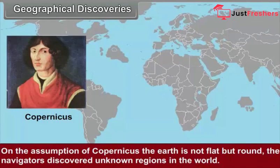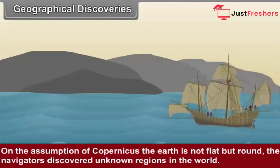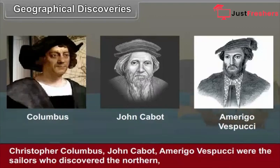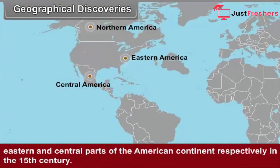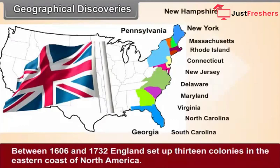On the assumption of Copernicus, the earth is not flat but round. The navigators discovered unknown regions in the world. Christopher Columbus, John Cabot, and Amerigo Vespucci were the sailors who discovered the northern, eastern, and central parts of the American continent respectively in the 15th century. Between 1606 and 1732, England set up 13 colonies in the eastern coast of North America. Vasco de Gama found out the sea route to India. Ferdinand Magellan, the Portuguese sailor, circumnavigated the earth first, but he was killed during his voyage. Nevertheless, his companions completed the dream project of Magellan.